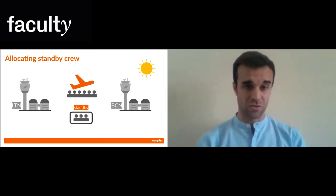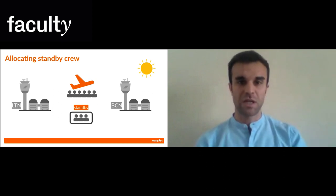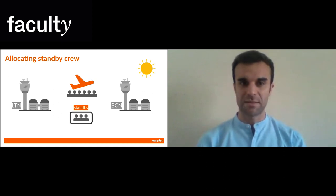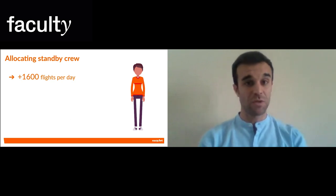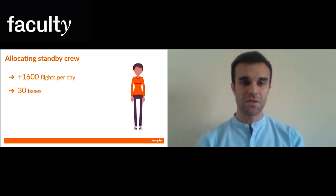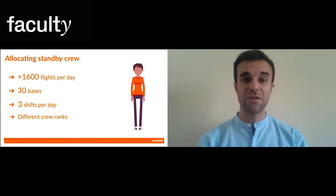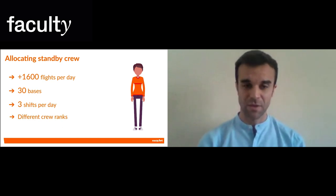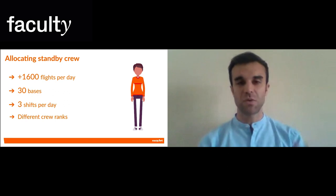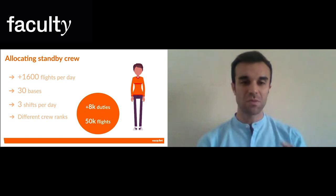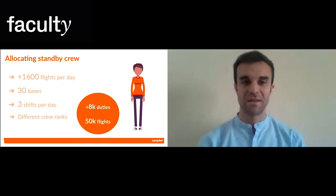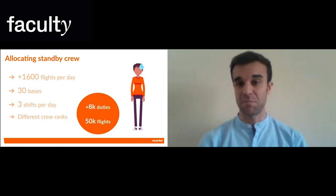This was easy and conservative, as it just consists of a couple of flights during a summer day. But EasyJet operates more than 1,600 flights per day, which interact with each other as we saw, in 30 bases across Europe, with three shifts to cover per day. And we have different crew ranks that cannot replace each other. So if we are to schedule standby crew for a month, this leaves us with more than 8,000 duties to cover almost 50,000 flights. The possibilities are billions, and making a flight-by-flight analysis like the previous one is simply impossible for a human.